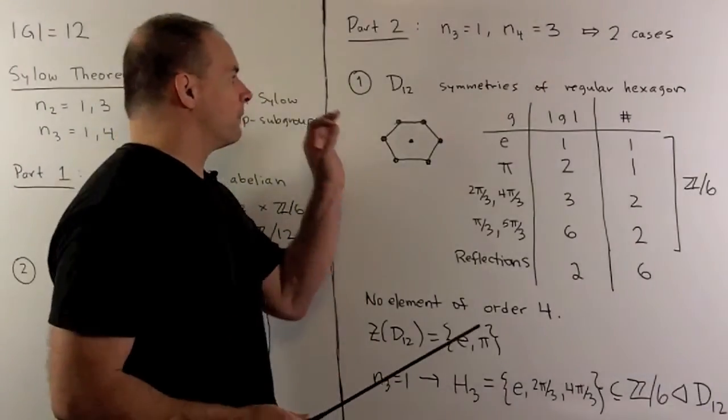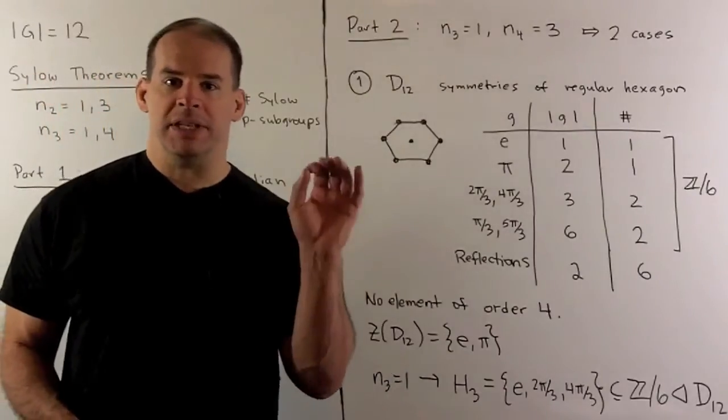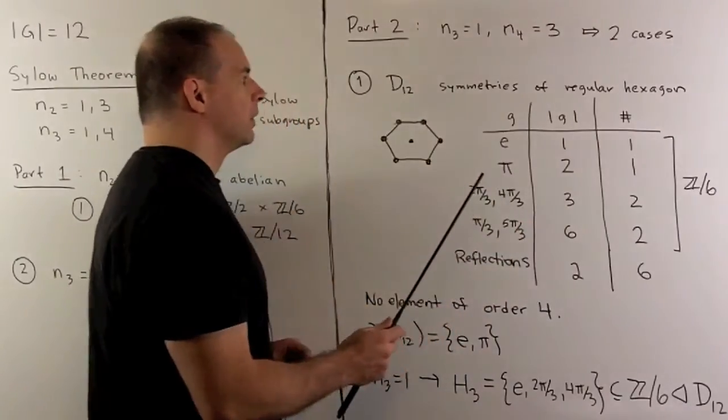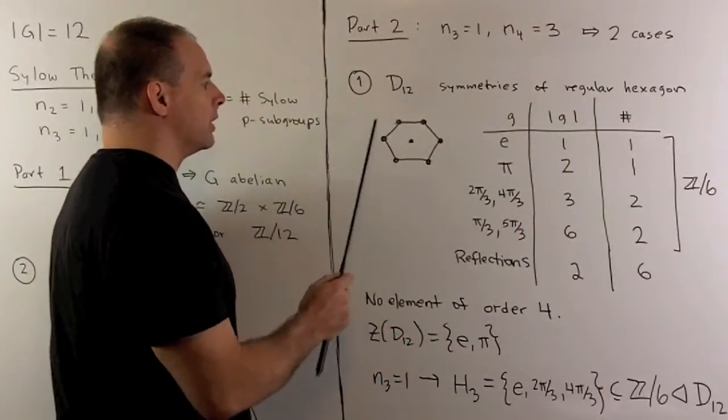Now, the first one, probably familiar, we have D12, the symmetries of a regular hexagon. So this group has 12 elements.